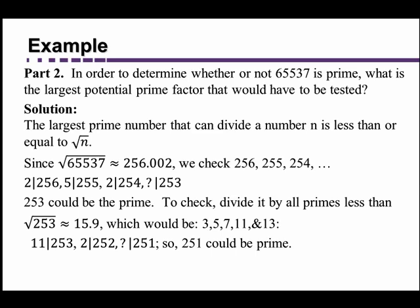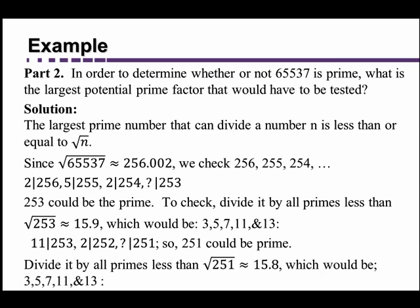So 2 divides 252, now we're going to check 251. 251 could be prime. So we're going to repeat the process that we did before. We're going to take the square root of 251, which is 15.8, so we're going to again have to check 3, 5, 7, 11, and 13. None of those divides evenly into 251, so 251 is actually the largest prime that you would have to check if you're going to confirm that 65,537 is prime.